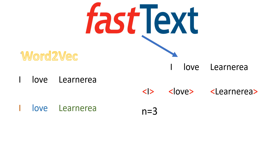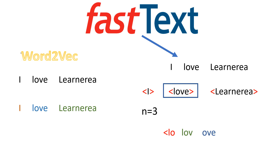Usually we use n-gram in the range of three to six. Let's say we supply the input and it breaks it down. When it accepts the n-gram parameter, it applies it on each word. For example, with the word 'love' and n=3, it will split it like: angular bracket L O, then L O V, then O V E, then V E angular bracket. So FastText works at the character level, whereas Word2Vec works at the word level.